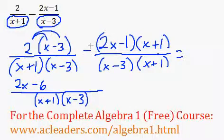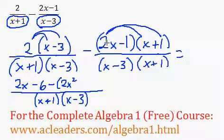And now note that we're subtracting 2x minus 1 and x plus 1. Now, let us FOIL this. So 2x times x is 2x squared. 2x times 1 is 2x. Negative 1 times x is negative x. And negative 1 times 1 is negative 1.